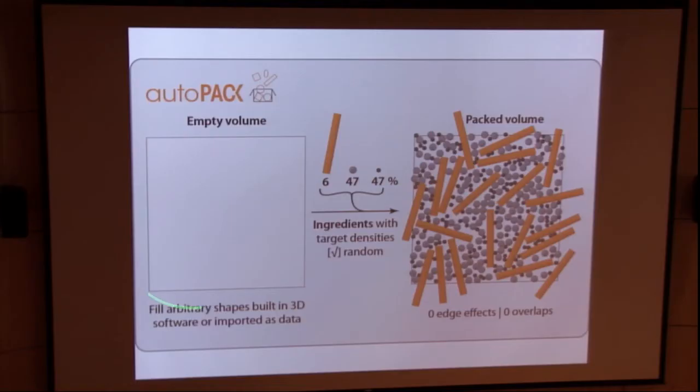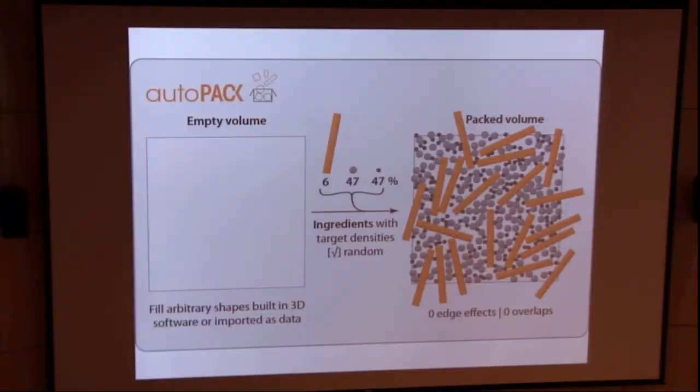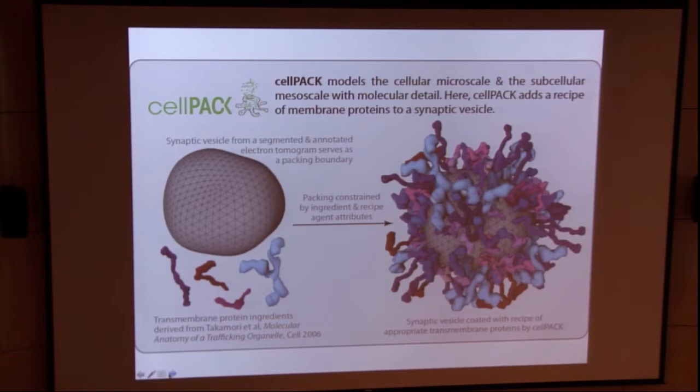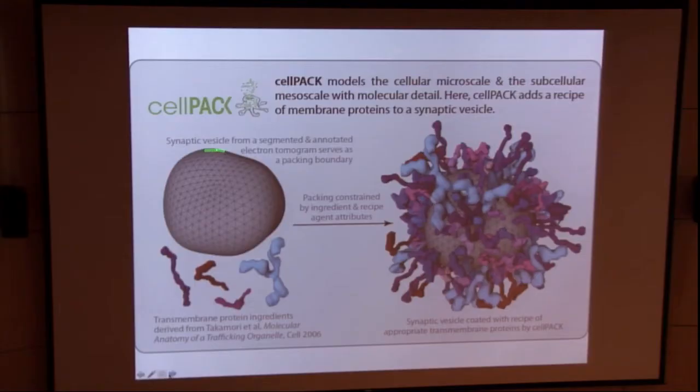Quickly, the way to think about this is you start with an empty volume. In this case, with AutoPak, we have some arbitrary components here, cylinders, spheres of different sizes. We know through experimental methods, the approximate percent of the ingredients, the target densities, if you will, of these different components. And the challenge here is to pack these components at these percentages into this volume, such that there are no violations of the edge. And so, AutoPak does that. And the Companion CellPak module does things now with biologically relevant components, such as synaptic vessels and transmembrane proteins, packing these according to those same kinds of rules that you saw to make biologically relevant models.